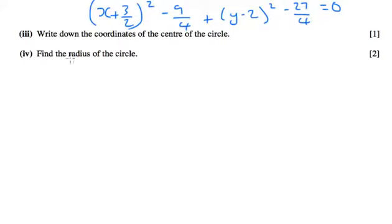Okay, so part four asks for the radius. We've already written down that the centre is minus 3 over 2, positive 2.